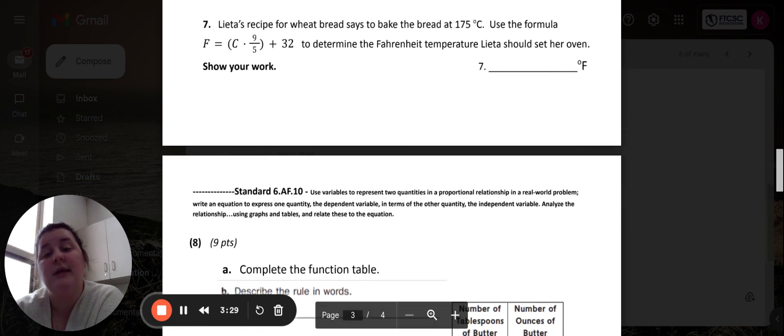Number seven says Lita's recipe for wheat bread says to bake the bread at 175 degrees Celsius. Use the formula to determine the Fahrenheit temperature Lita should set her oven. Please pause the video and complete number seven.